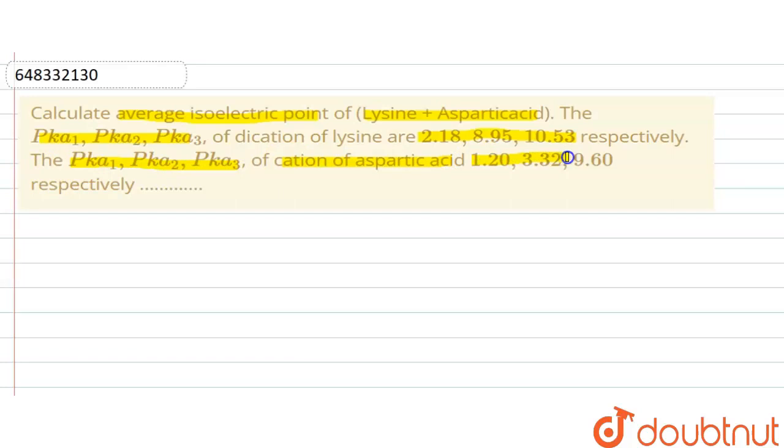Okay, so first is lysine. Lysine pI value is equal to 2.18 plus 8.95 plus 10.53.